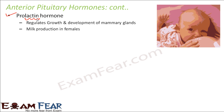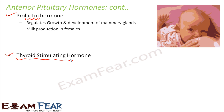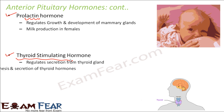Next is thyroid stimulating hormone — the name is self-explanatory. It regulates secretion from the thyroid gland, controlling when the thyroid gland secretes thyroid hormones like T3, T4, and calcitonin. The synthesis and secretion of thyroid hormones is controlled by thyroid stimulating hormone.